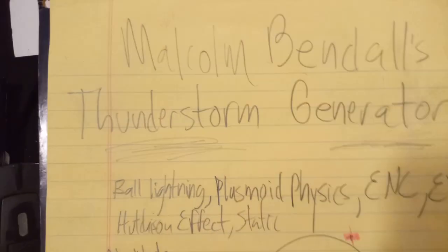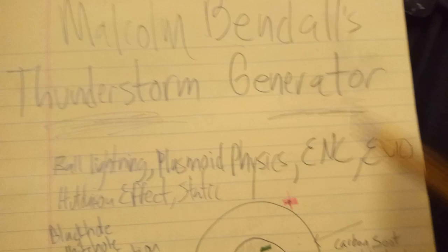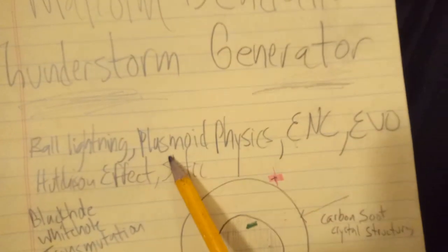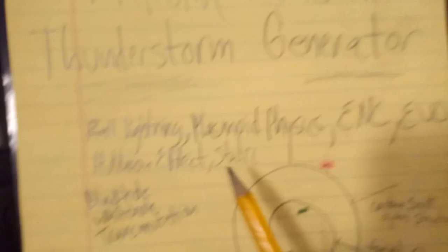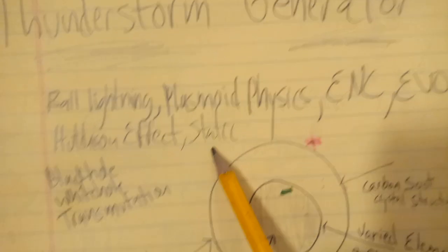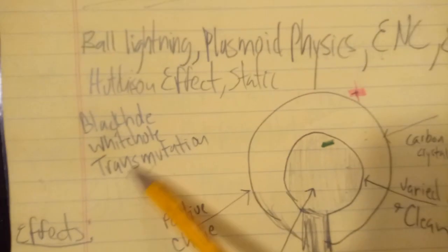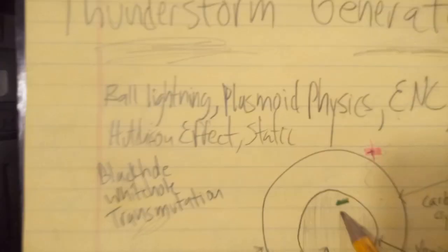They have built a prototype so far that has produced some really bizarre phenomena and interesting phenomena: ball lightning plasmoids, ENCs, exotic vacuum objects, Hutchison effect aspects.